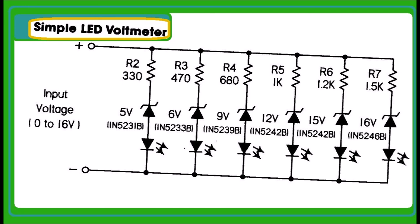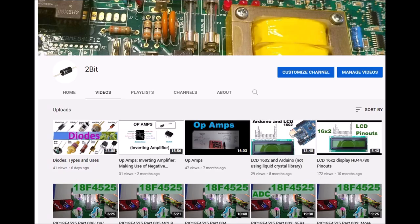Most LEDs are happiest around 20 milliamps or so. You can calculate the worst case scenario to be at the 5 volt LED leg when voltage in equals 16 volts. If you're looking for more sophistication, you can always use an analog to digital converter along with a microcontroller and LCD or LED display. Thank you very much for listening and I hope this video has been informative.